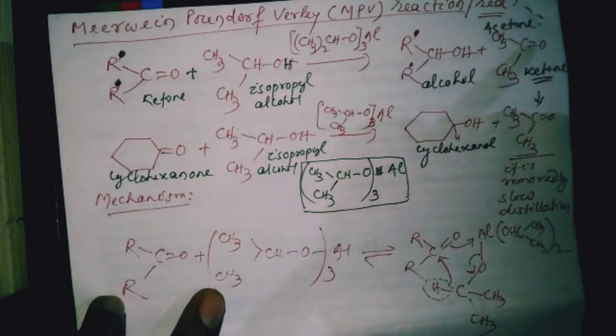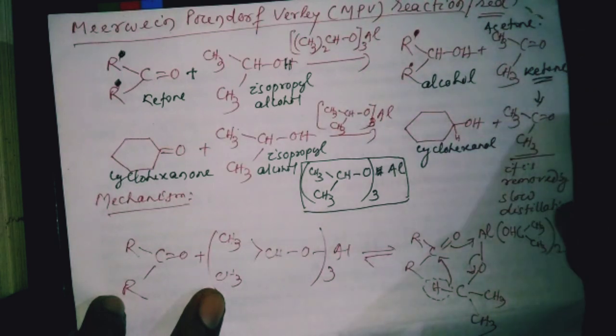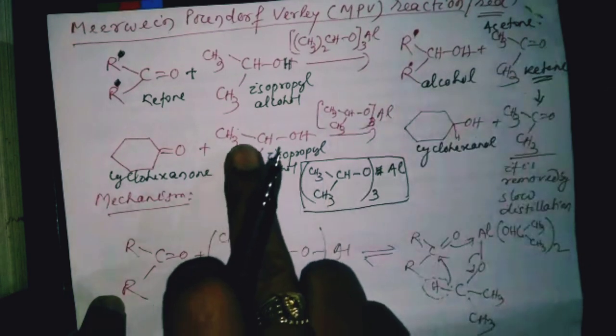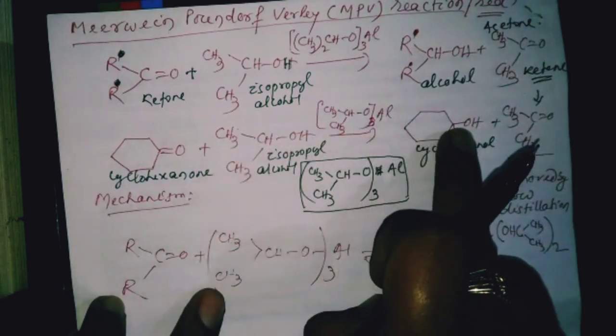This is cyclohexanol. During the reaction, acetone is removed by slow distillation so that the forward reaction is favored.